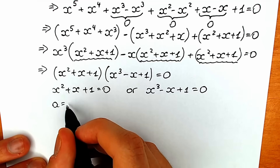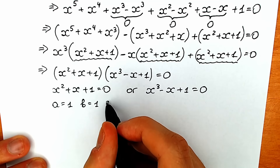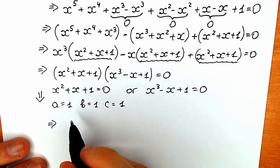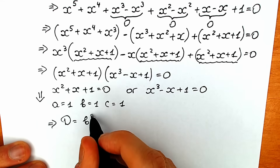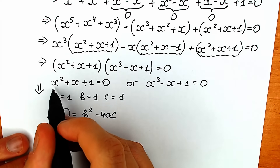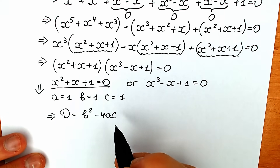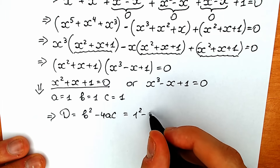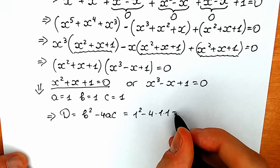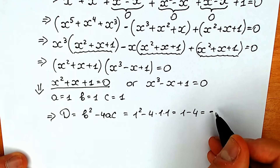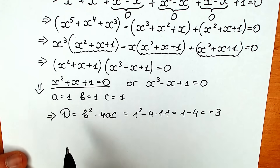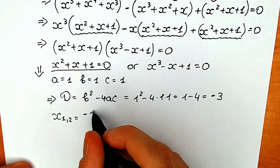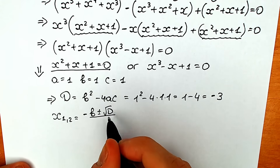Let's solve x square plus x plus one equal to zero. We write our coefficients: a equals one, b equals one, and c equals one. Now let's find the discriminant: d equals b square minus four times a times c. Plugging in, we have one squared minus four times one times one, which equals one minus four, equal to minus three.